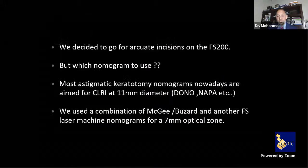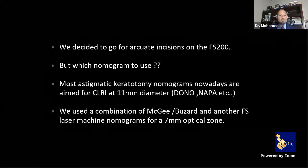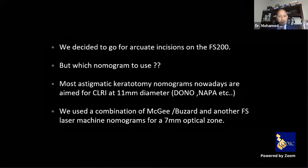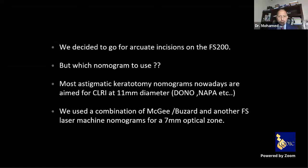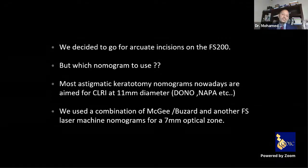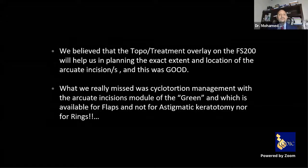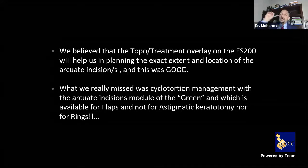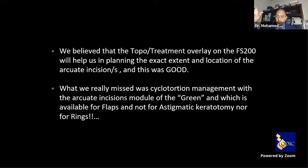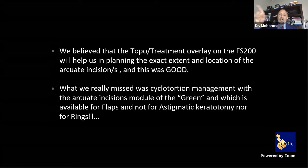We decided to go for arcuate incisions on the FS200 femtosecond laser. For the nomogram, most astigmatic keratotomy nomograms are aimed at clear corneal limbal relaxing incisions — mainly for cataract surgery, not for post-femto keratoplasty. So we used a combination of the McGee-Boussard approach and the Intralase nomogram for a 7 mm optical zone. The topo-treatment overlay on the FS200 allowed us to project the topography and precisely position arcuate incisions over the area of scarring.